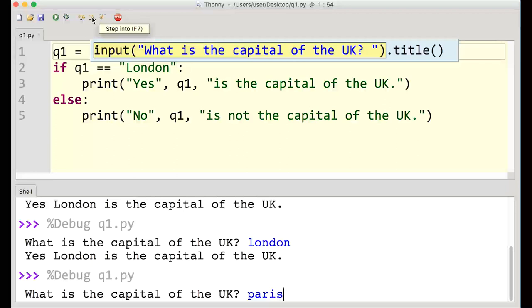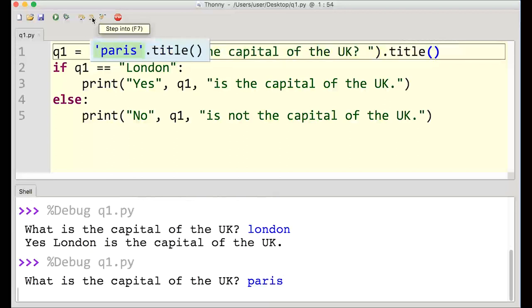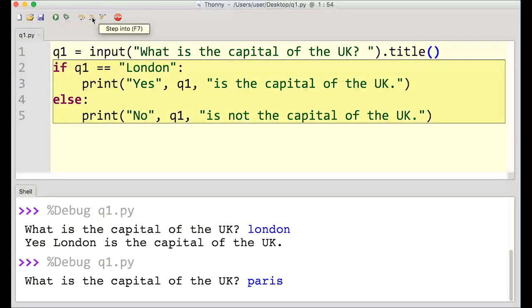And what happens there, you can see how the title, the dot title, open and close brackets, works on that input by making the first character into an uppercase letter. And then that moves into the next part of the program, the if statement, Q1, Paris, with the capital, is equivalent to London.